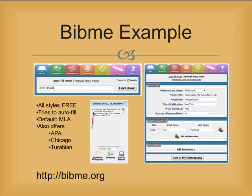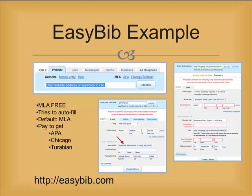The default style is MLA, but other styles can be selected from the drop-down format list. EasyBib works just about like BibMe. Notice it offers all 58 source type options, giving you a chance to select just the right type of source, which may give you a more accurate citation. One big difference with EasyBib is that MLA is free, but you'll have to pay if you want any other style.